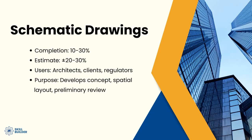When we're looking at schematic drawings, these are going to find themselves somewhere between 10 to 30, sometimes even 40 percent completion. We're going to be able to provide estimates that have a 20 to 30 percent accuracy when using these drawings, because it's going to show an overall outline or skeleton of the expectations of the project. The people using schematic drawings include architects, clients, and anybody involved in understanding the permit process or the code requirements and criteria that need to go into this project. We use these to develop conceptual layout drawings that give us a preliminary review of the intention of the project.